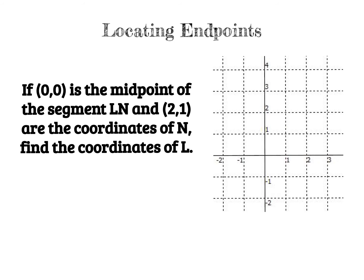Here, we are going to find an endpoint. So if you read this example, it says, if 0, 0 is the midpoint of segment LN, and 2 comma 1 are the coordinates of N, find the coordinates of L. So here, the key thing to understand is that we're looking for the coordinates of L. For this segment. So there's a segment called LN. L, N. There's a segment called LN. I want to find the coordinates of L.